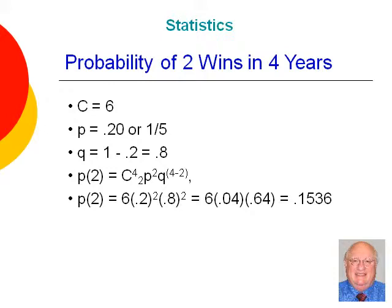All of which would satisfy the requirement of winning two out of four. When we apply the formula for determining the number of combinations that would work, we come up with a total of six combinations that would satisfy the outcome.